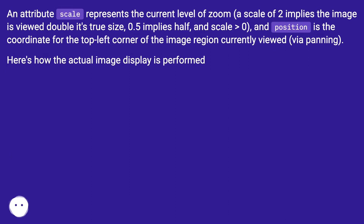An attribute 'scale' represents the current level of zoom: a scale of 2 implies the image is viewed at double its true size, 0.5 implies half, and scale is always greater than zero. 'Position' is the coordinate for the top left corner of the image region currently viewed via panning. Here's how the actual image display is performed.